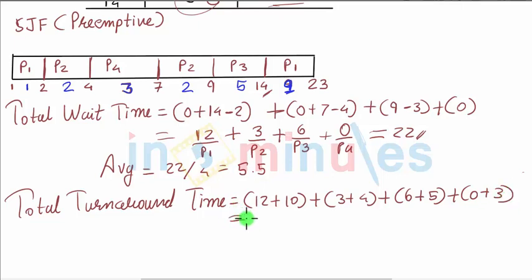This comes out to be 43. Average is 43 by 4, so in our case it is 10.75.